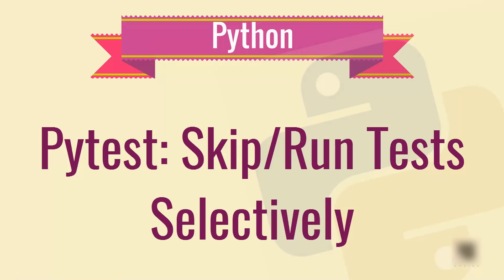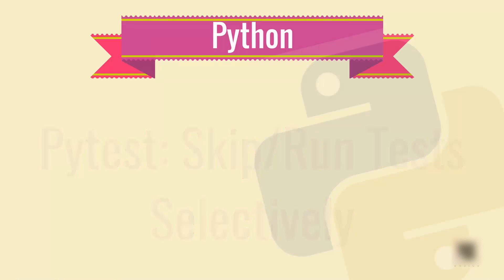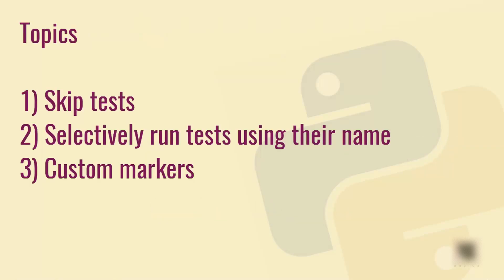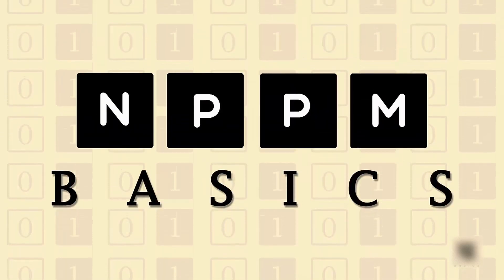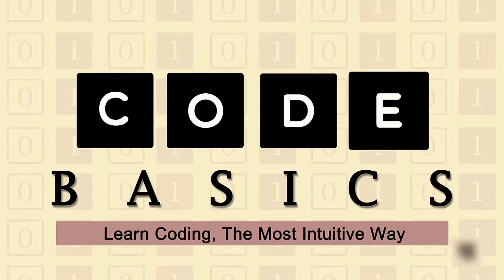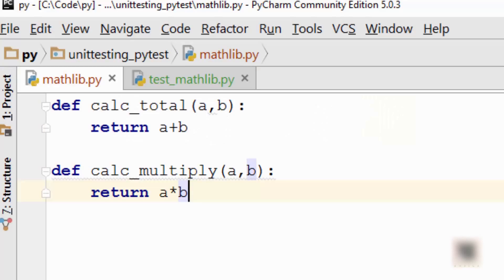Hello everybody, welcome to another tutorial on unit testing in Python. If you have not seen my pytest introduction tutorial, pause right now and go watch that before continuing. In this tutorial we are going to cover how to skip tests from running, how to selectively run your tests using the name as an expression, and the third thing we are going to look at is custom markers.